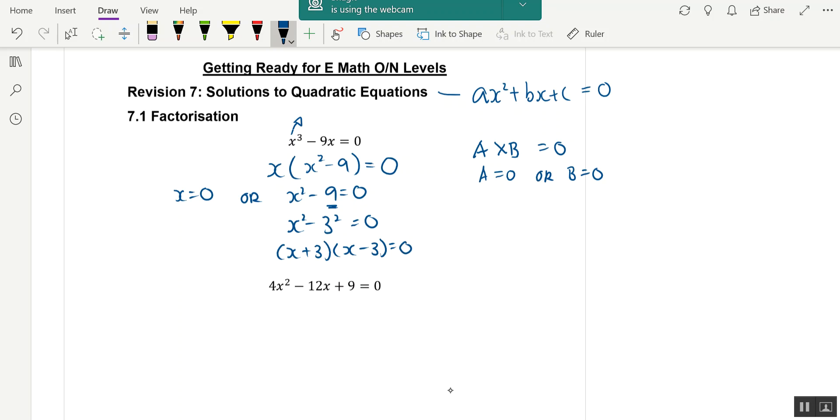So again, we have two products equals to 0. It means that x plus 3 equals to 0 or x minus 3 equals to 0, which means I will have x equals to negative 3 or x equals to 3. So I have my three answers.